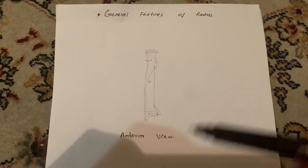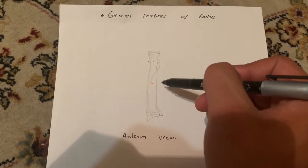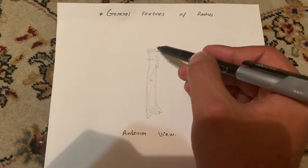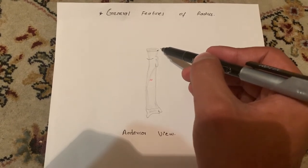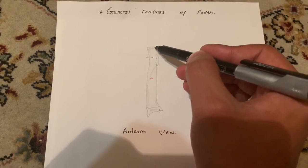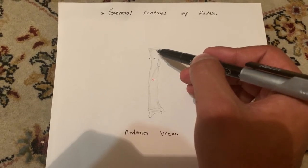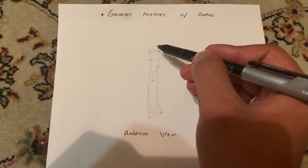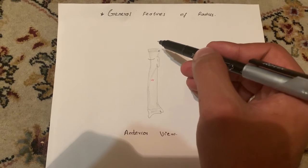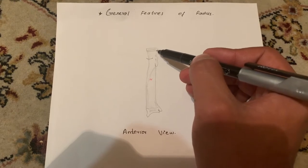Being a long bone, it consists of three parts: the upper end, the lower end, and the shaft. At the upper end, there is the head of the radius. The head of the radius is disc-shaped in nature. Its superior surface is concave, and this superior surface of the radius articulates with the capitulum to form the radiohumeral joint, which is part of the elbow joint.